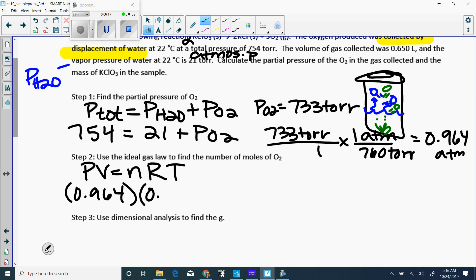My volume I think was 0.65, moles I'm solving for, R is 0.08206, and I have no idea what my temperature was, plus 273 is 295. Find your moles and then do your stoichiometry to get back to grams.